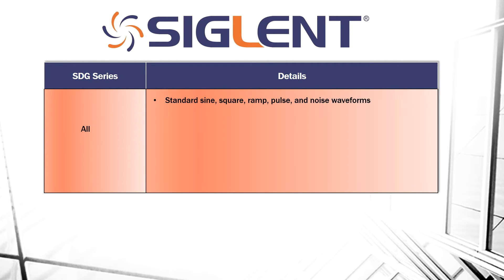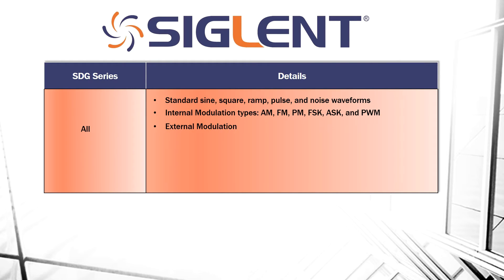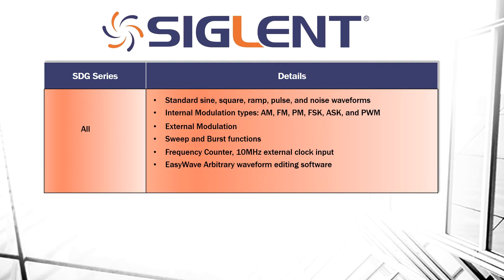They all have standard sine, square, ramp, pulse, and noise waveforms, as well as internal modulation types including AM, FM, PM, FSK, ASK, and pulse width modulation or PWM. We also have external modulation capabilities through a BNC output located on the back of each unit, and we've got sweep and burst functions. Frequency counter with a 10 MHz external clock input for synchronization with other instrumentation, EasyWave arbitrary waveform editing software for use on your PC, and USB remote computer control.